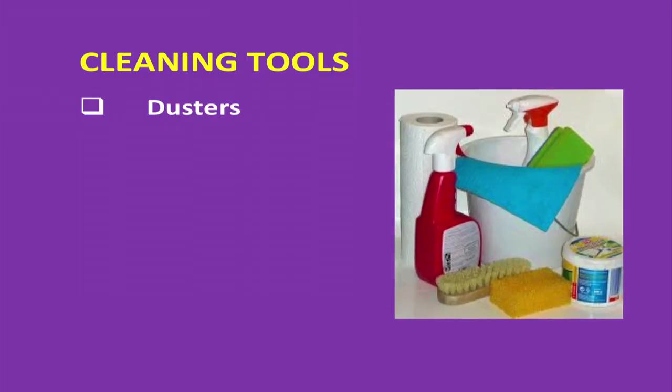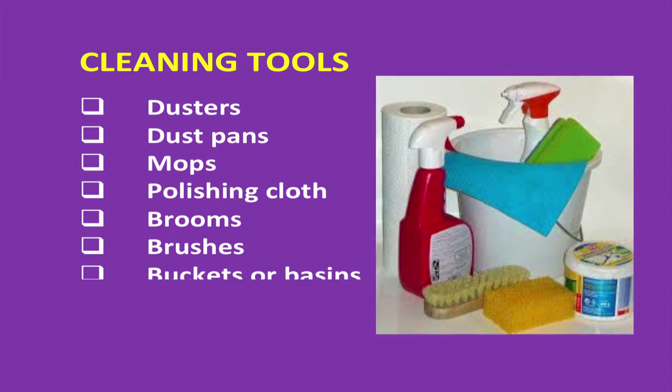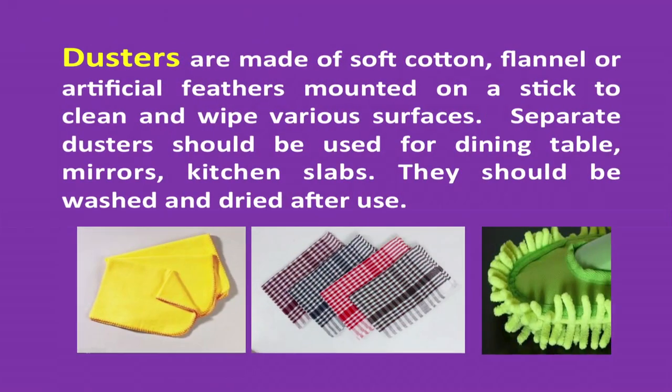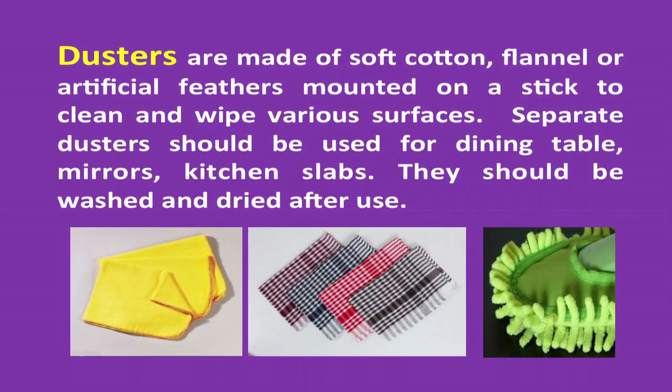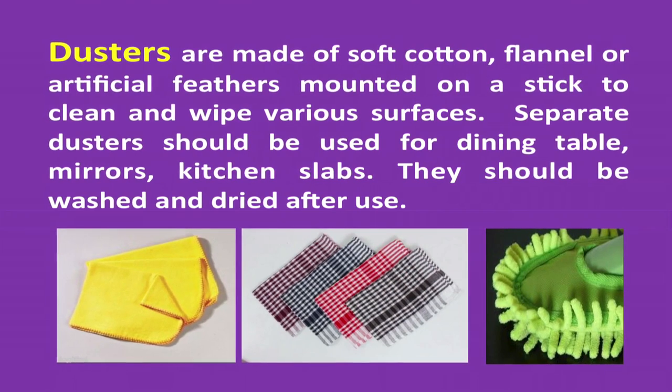Now let's study cleaning equipment and materials in the home. The different cleaning equipment are dusters, dust pans, mops, polishing cloth, brooms, brushes, buckets or basins, dust bins, and vacuum cleaner. Dust pans are made of either plastic or metal and have flat surfaces rounded at the sides. After sweeping, dirt and dust is collected directly into these with a broom and carried to a dust bin. Dusters are made of soft cotton, flannel, or artificial feathers mounted on a stick to clean loose dust and are also used for wiping various surfaces.